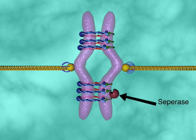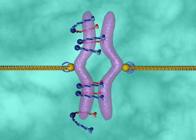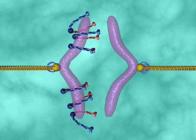In the transition from metaphase to anaphase, a protein called separase is released that cleaves the cohesin rings holding the chromatids together.